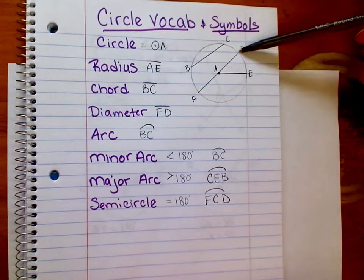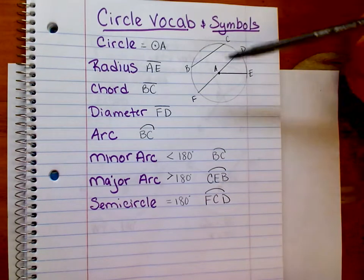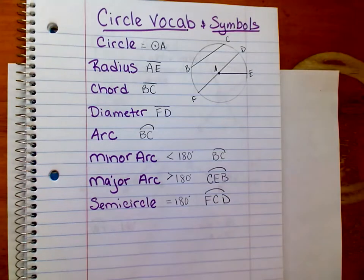A semicircle is an arc that equals 180 degrees. Keep those things in mind when you're writing about circles.